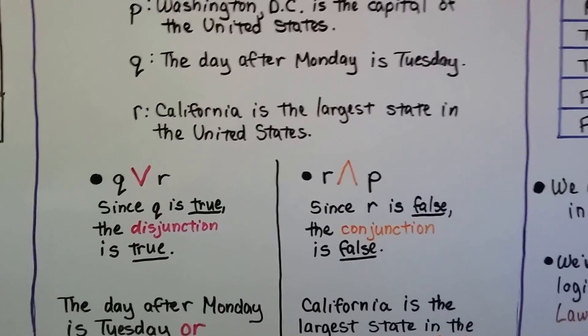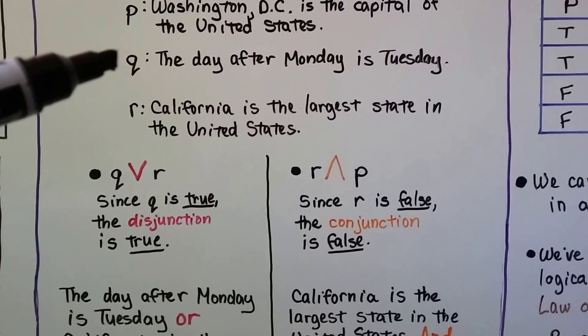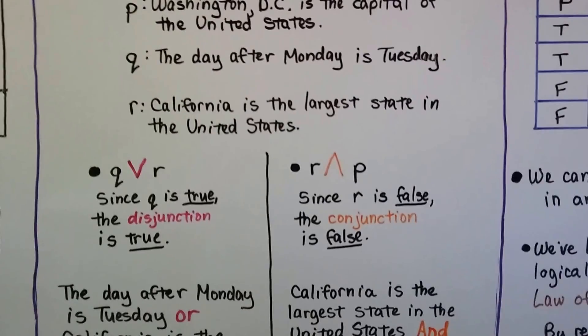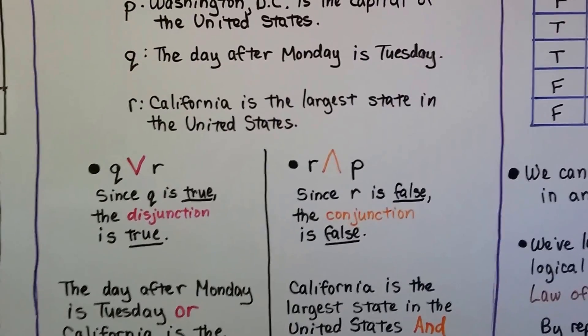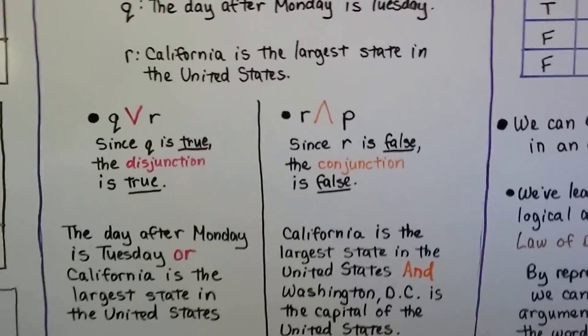So if we said Q or R, we would say the day after Monday is Tuesday or California is the largest state. Well, that's true because one of the parts is true.